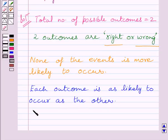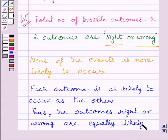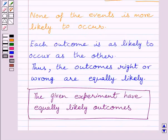Thus, the outcomes right or wrong are equally likely. So, our required answer is the given experiment have equally likely outcomes.